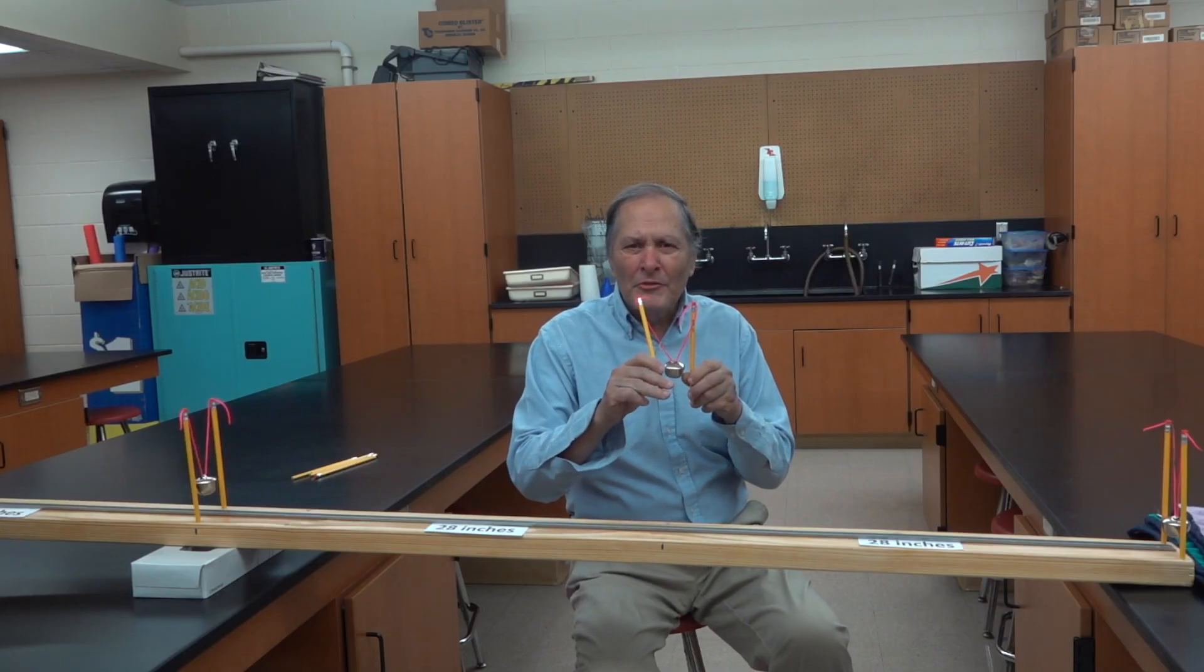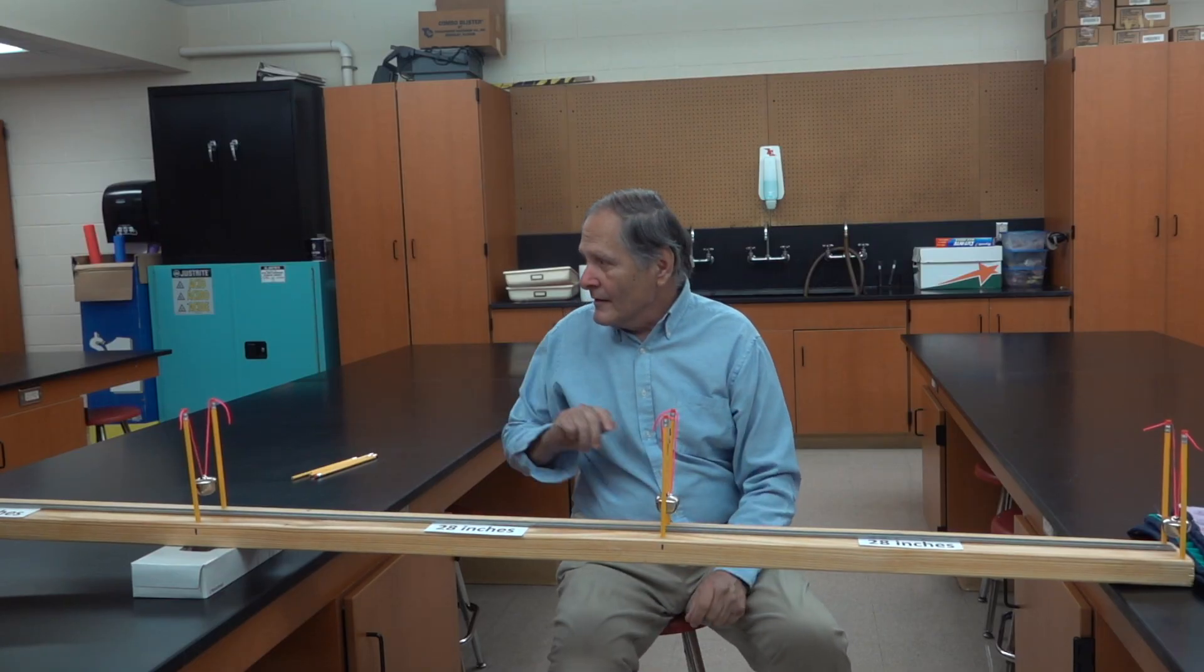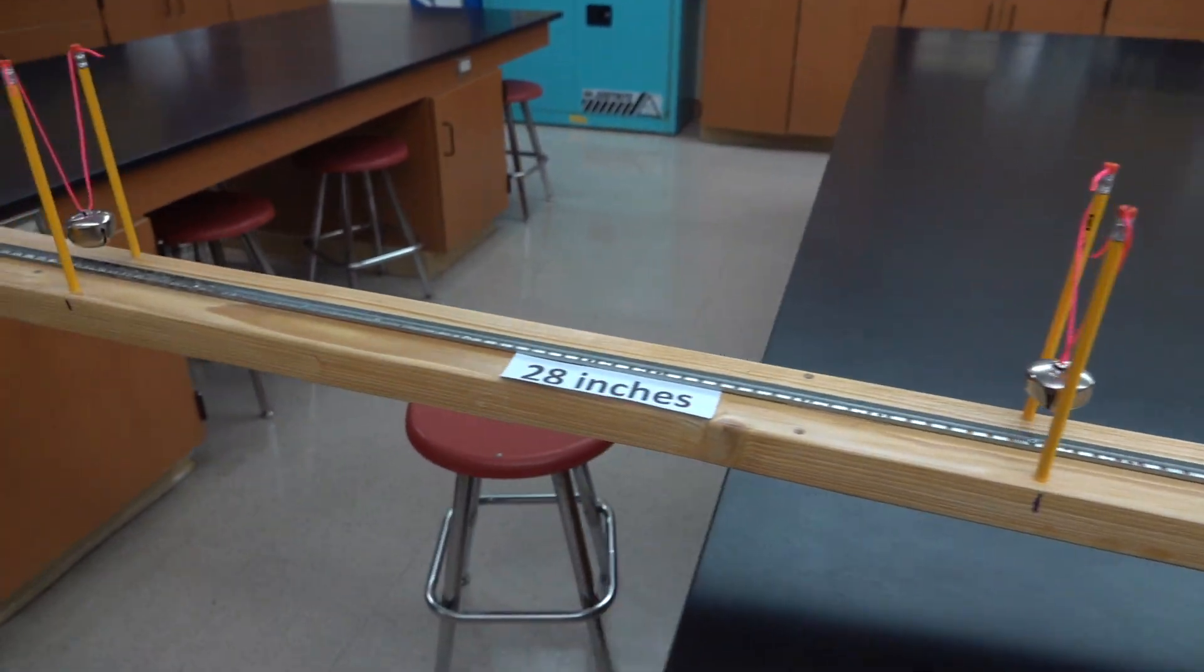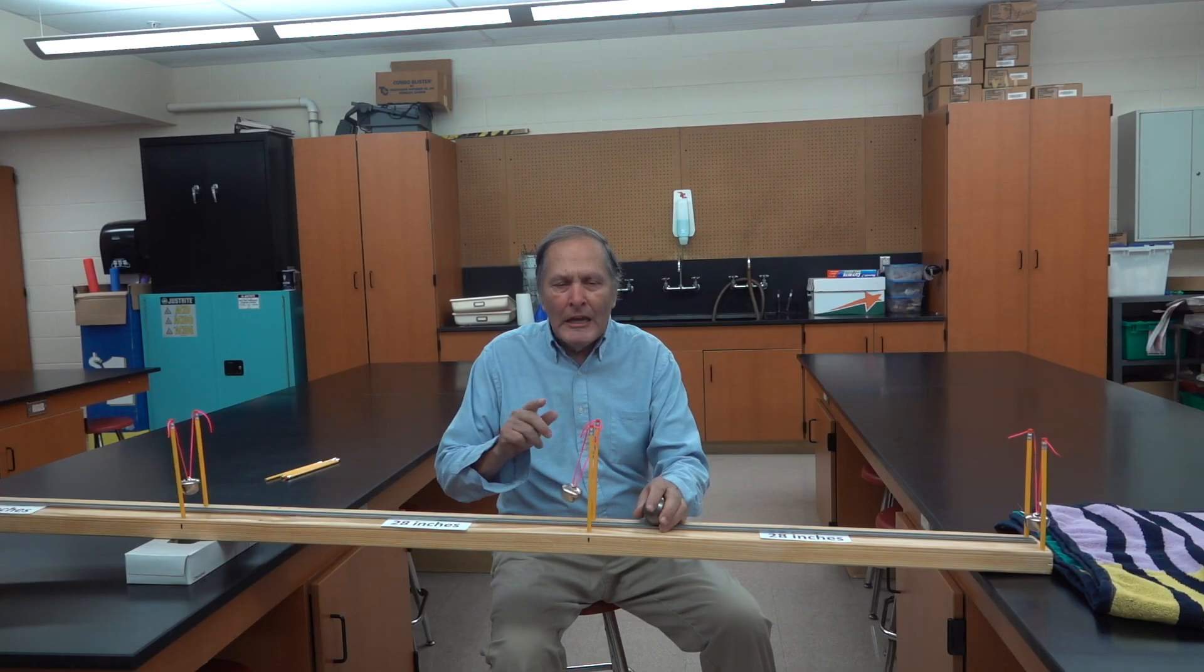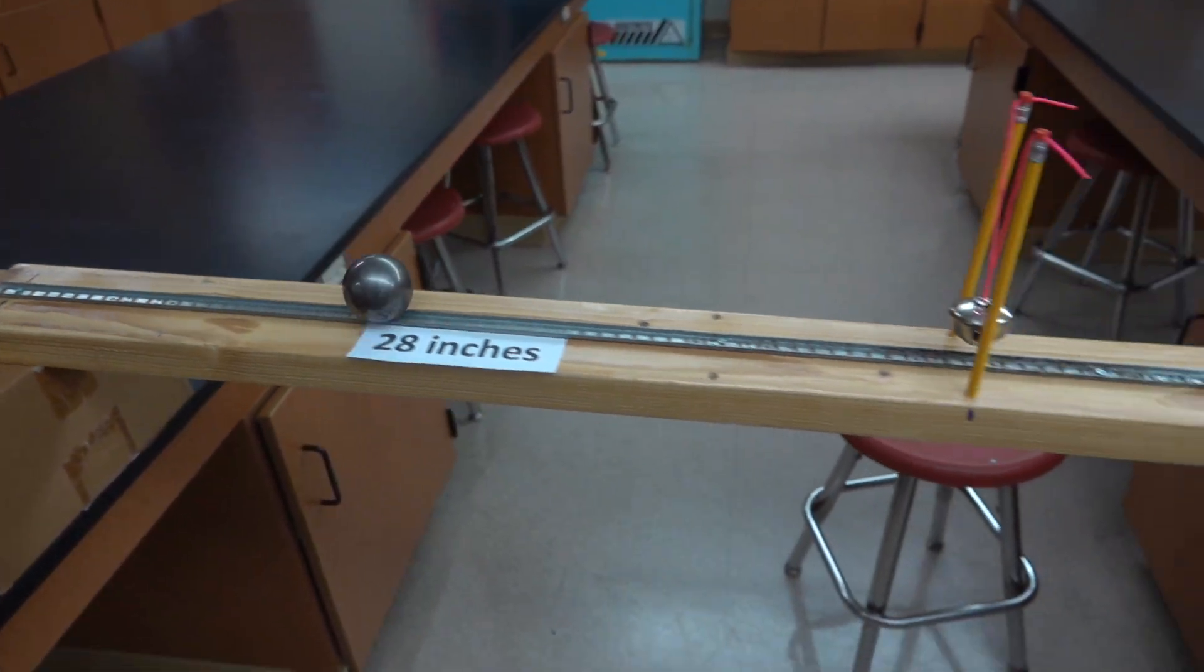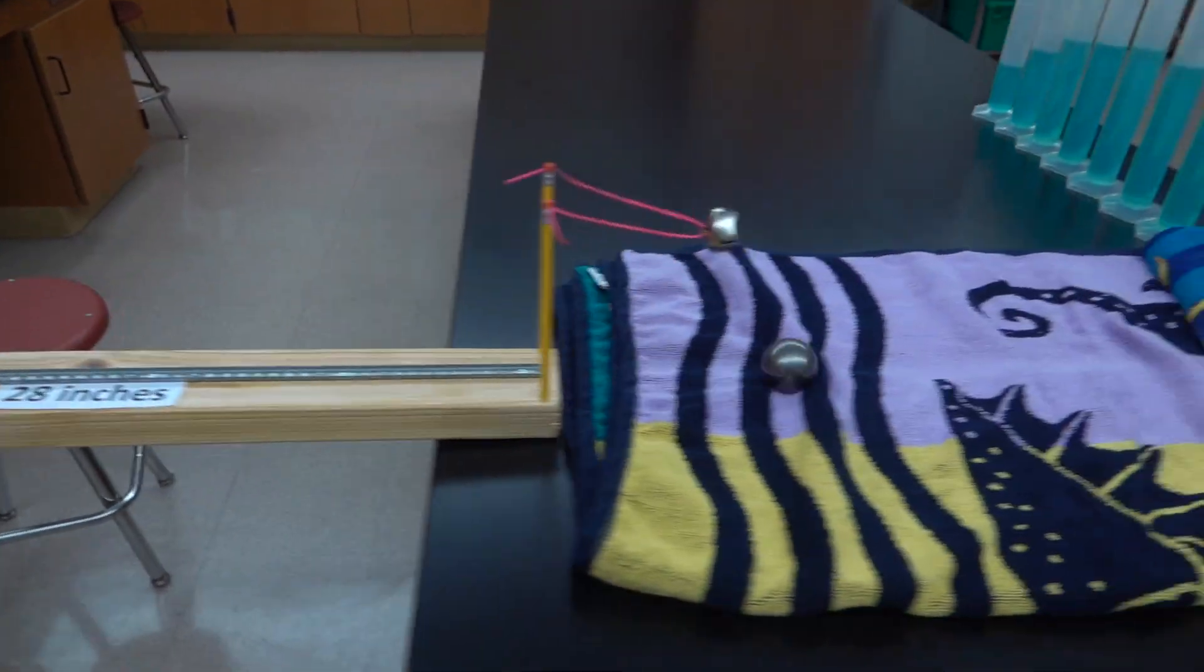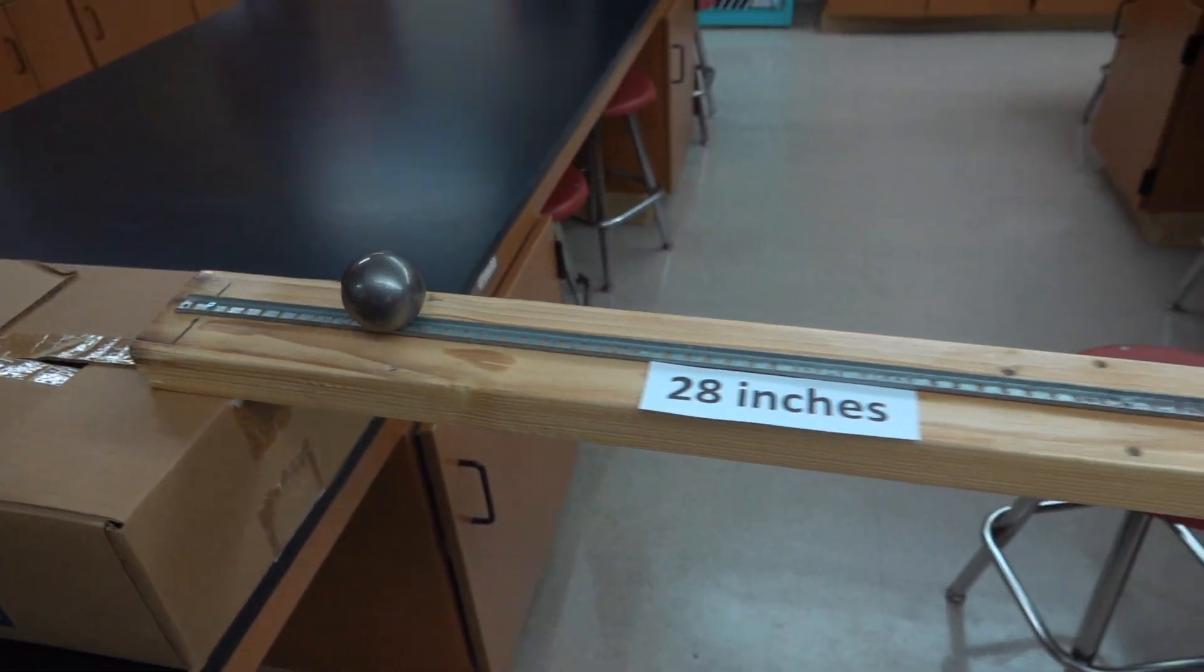Now another way we can demonstrate this is to put bells equal distance along the track. Once again, it's the same 28 inches in between each mark. As the ball rolls down, we can listen to the intervals in between each ring. You can hear that the rings get closer as the ball speeds up.